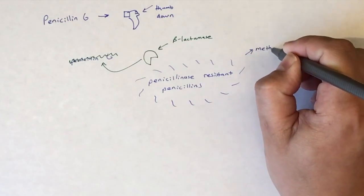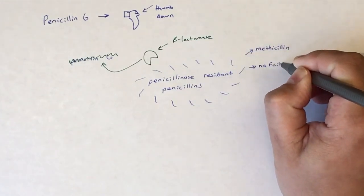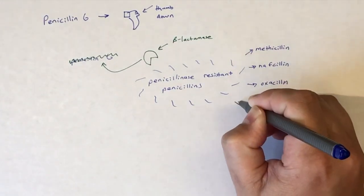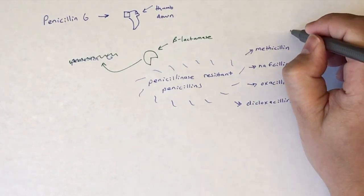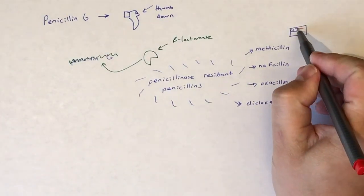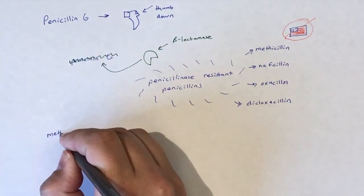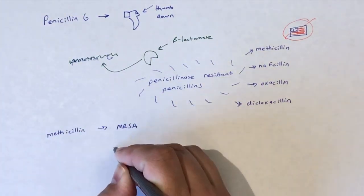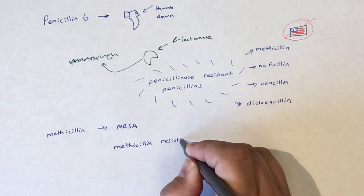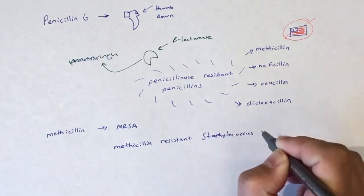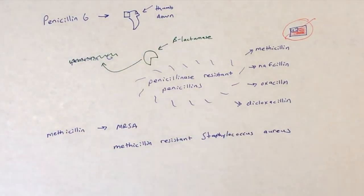Drugs that fall within this class include methicillin, nafcillin, oxacillin, and dicloxacillin. It is important to note that methicillin is no longer used in the U.S., but I've included it here because methicillin is often used in the naming of resistant bacteria. For example, MRSA is methicillin-resistant Staphylococcus aureus.